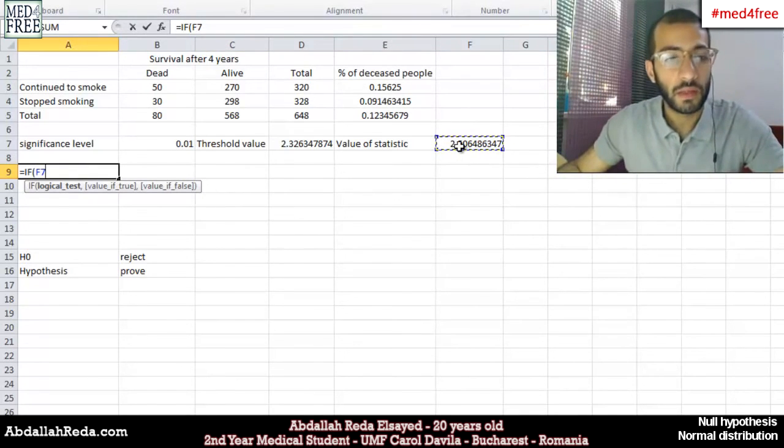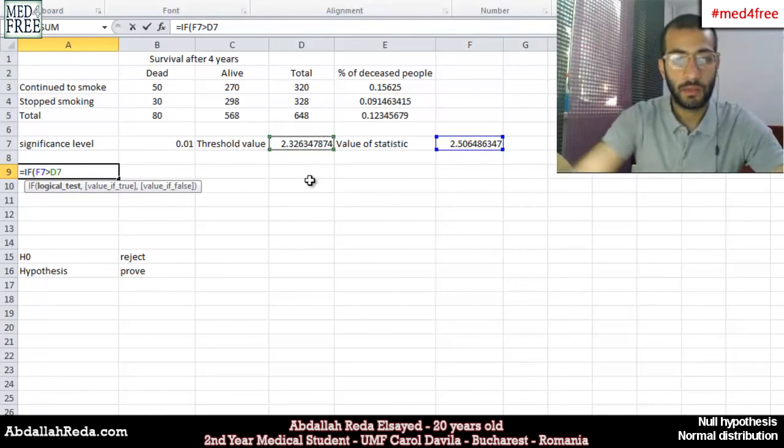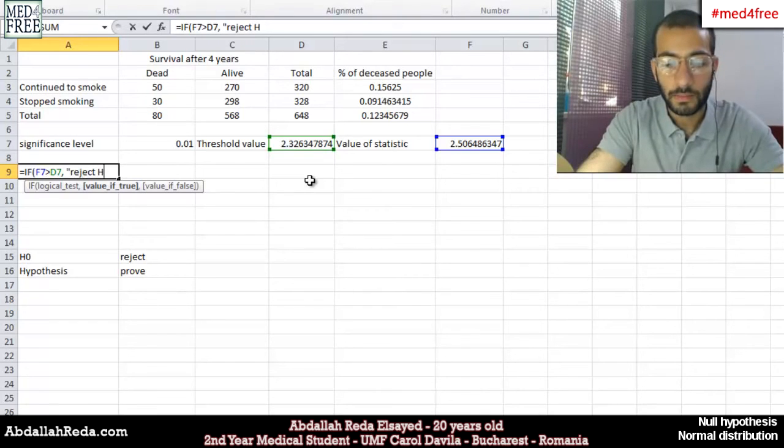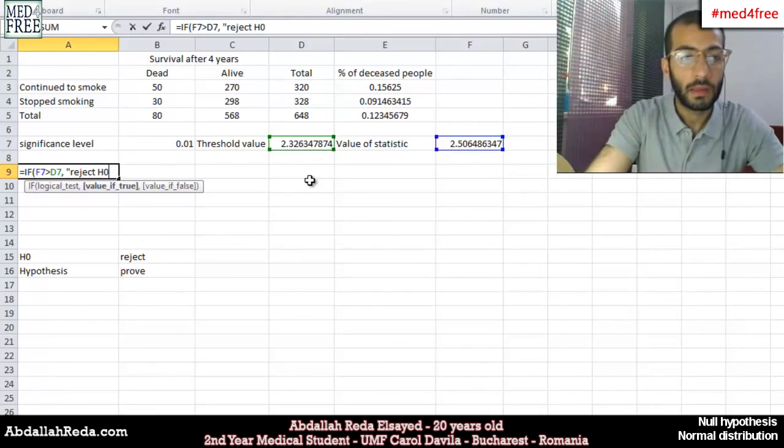So if this value is bigger than that value here, you should write that we reject the null hypothesis. Like this.